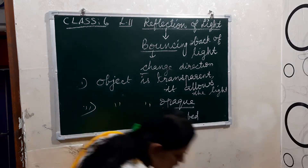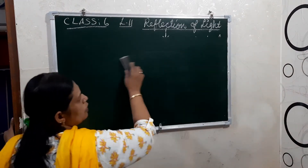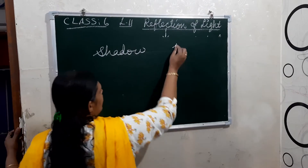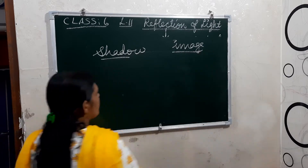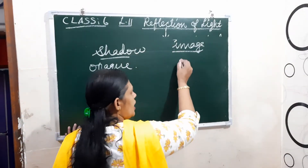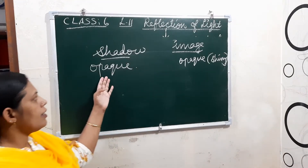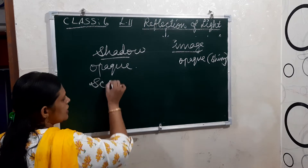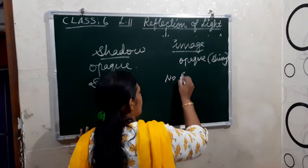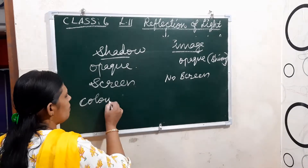Now, you have already studied about shadow. Let's compare shadow and image. For a shadow, an opaque object is required. For reflection giving an image, you also need an opaque object, but here it should be a shiny surface. For shadow, there must be a screen — only then will you get the shadow on the screen. But for an image, no screen is needed. In a shadow, you cannot say about the color, shape, or size of the object.